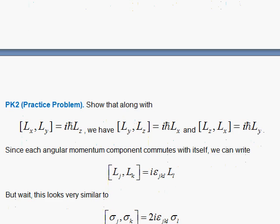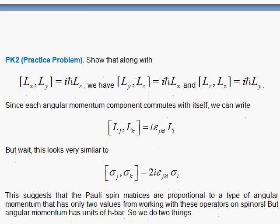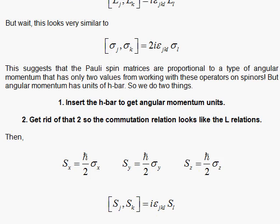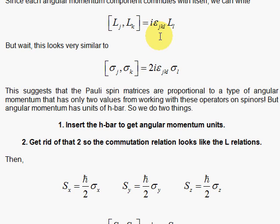And then we say, wait a minute. We've seen something like this before when we have these spinners. This is interesting. In other words, this is suggesting, this is abstract mathematics here, suggesting that these are related to angular momentum in some way. We've got that two there. And to get rid of that two, look at this neat little result. To get rid of the two, here we need the h-bar to get angular momentum units. And we've got to get rid of the two somehow, so the commutation relation looks exactly like the L relation, so I don't want the two in there. So here's how I can do that.